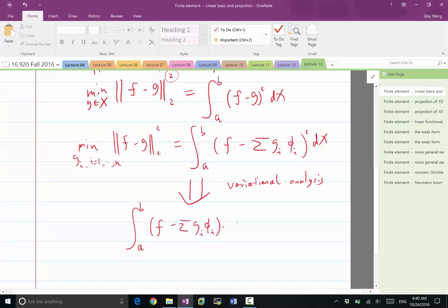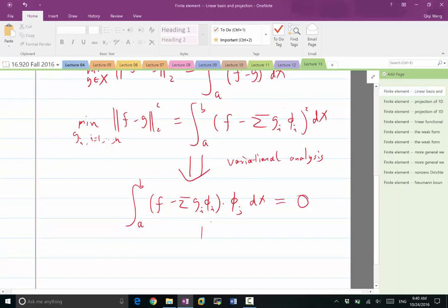has to be orthogonal to any function in the same space. Any function, of course, includes the basis. So this times any of the phi_j's has to be equal to 0, and this turns into a linear equation A*g = b.